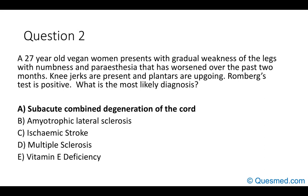Amyotrophic lateral sclerosis is not correct as it is motor neuron disease — you would not expect sensory dysfunction. An ischemic stroke is less likely in a younger woman, and strokes less commonly cause mixed motor and sensory loss. Multiple sclerosis fits the epidemiology but you'd expect flares rather than a gradual two-month weakness. Vitamin E deficiency is a distractor; a good rule of thumb for SBA questions is that if you haven't heard of it, it's probably not the right answer.